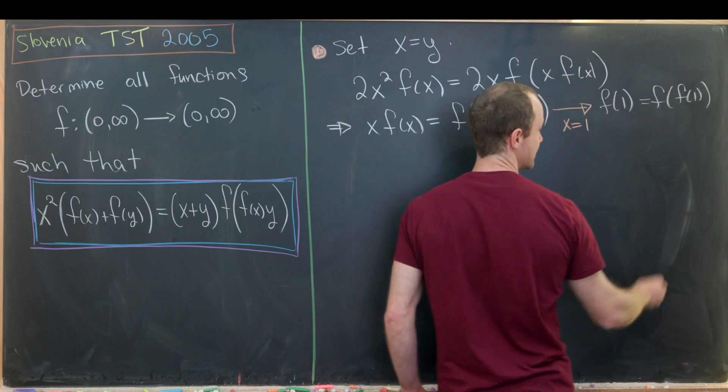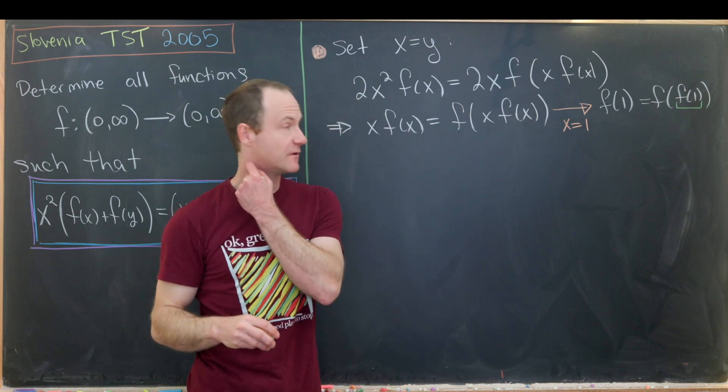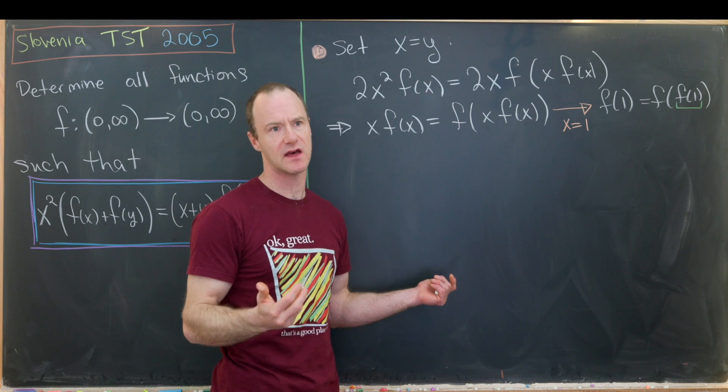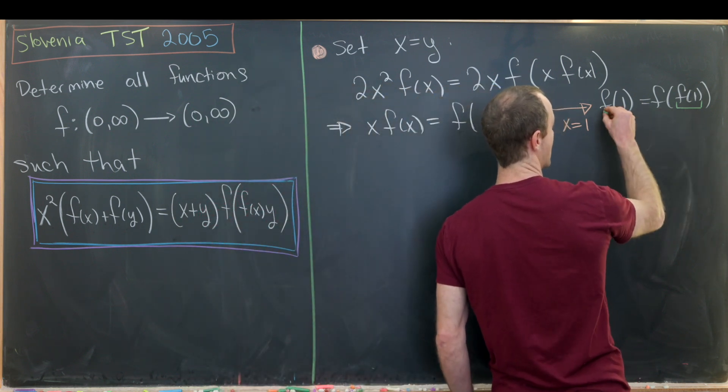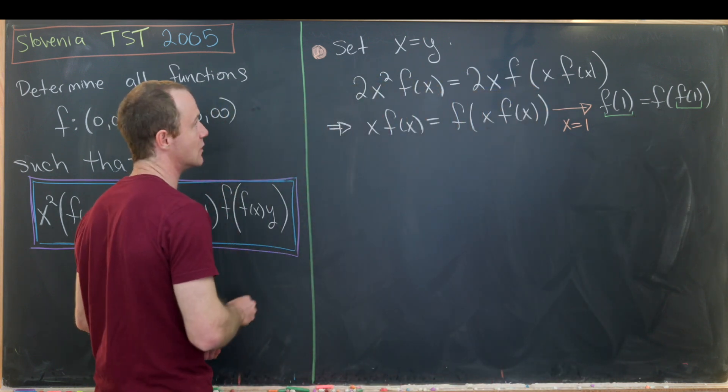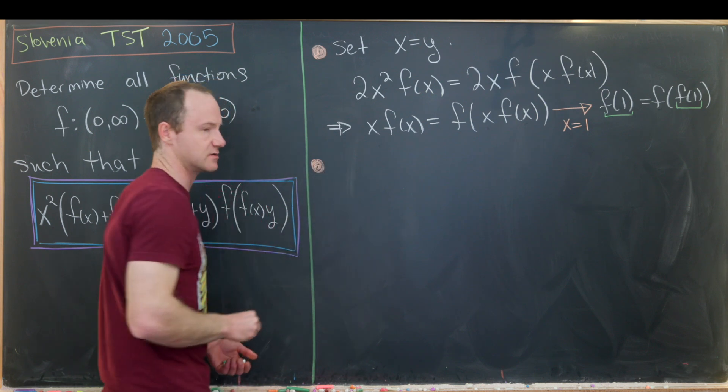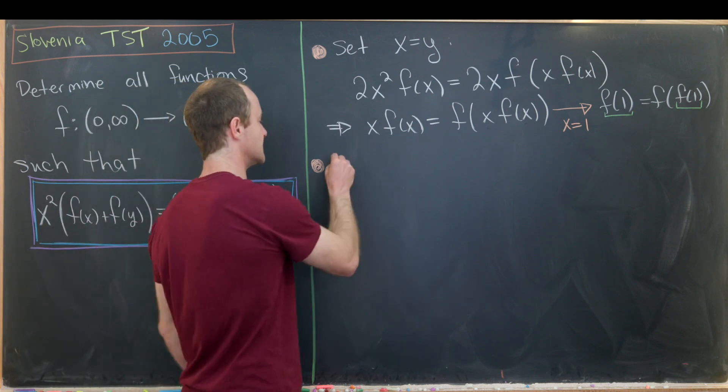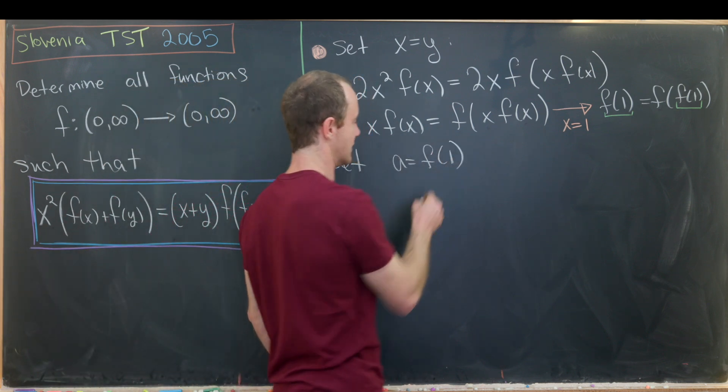So that tells you that this value f(1) is called a fixed point. A fixed point is a point at which when you evaluate the function, the value stays the same. So if we evaluate f at f(1), we get f(1) back out. That gives us some motivation to define that to be a certain variable on its own so that we can work with it more cleanly. So let's set a equal to f evaluated at one.